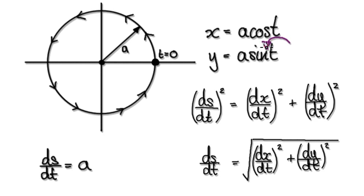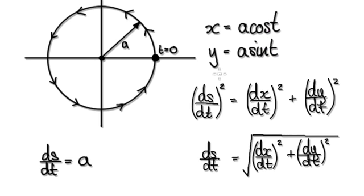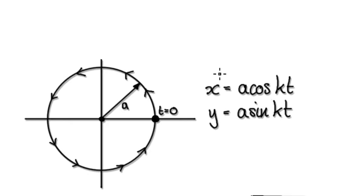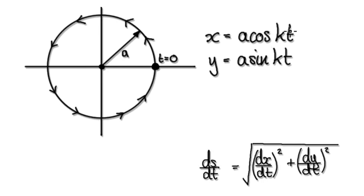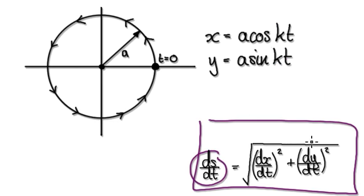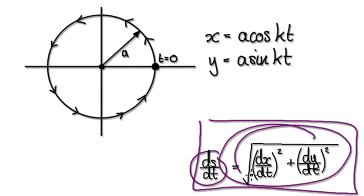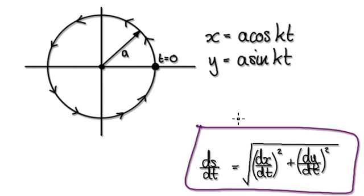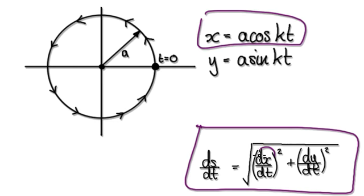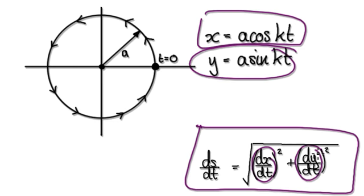So if you want to change the speed, stick a constant in front of here and here. Adjust your parametric equations to be something like this. To find the speed, use this formula — differentiate to obtain your dx/dt, and then differentiate this to obtain your dy/dt.